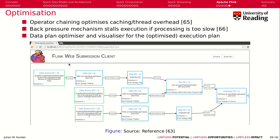Flink also allows you to chain operations together. For example, from the data source we run filter operations. It might be useful to combine them on the same node, because filtering hopefully reduces the data volume significantly — so it's good to run them on the same node, maybe inside the same execution environment. Likewise, map operations in certain cases could potentially be chained together.